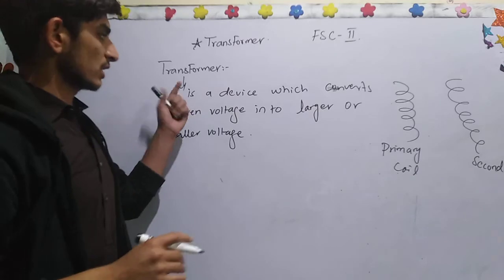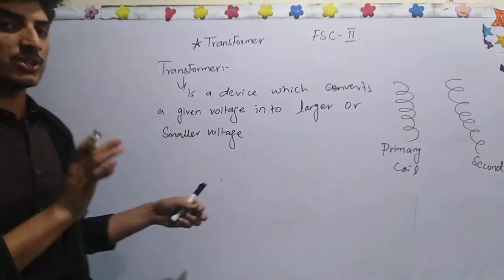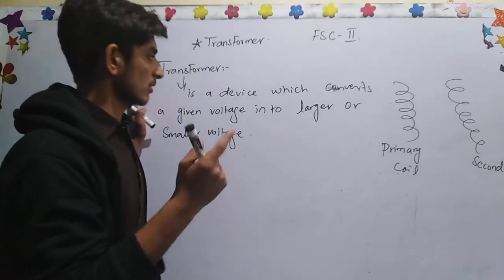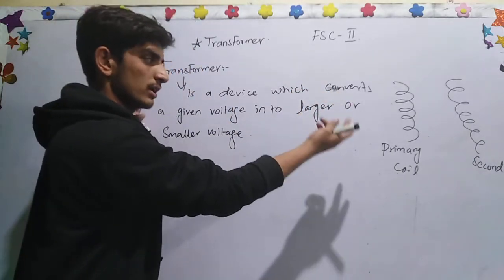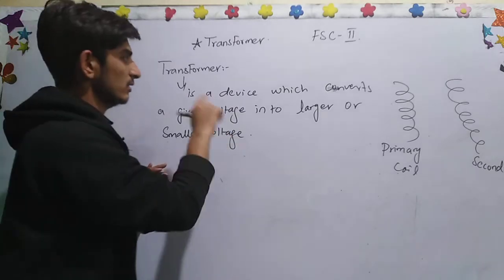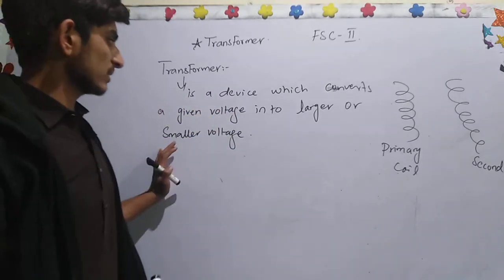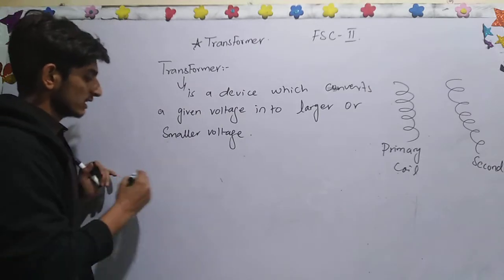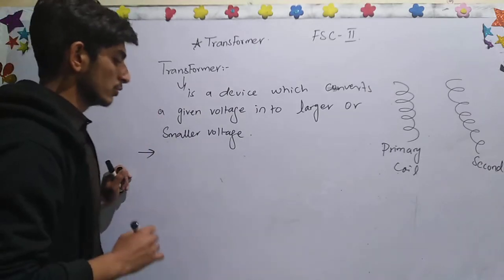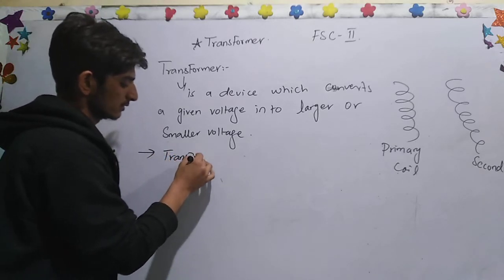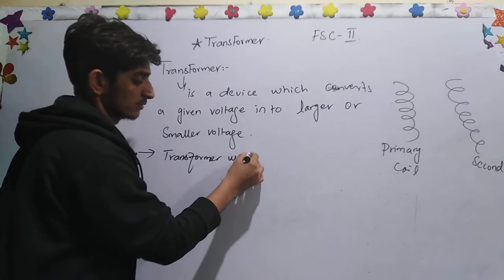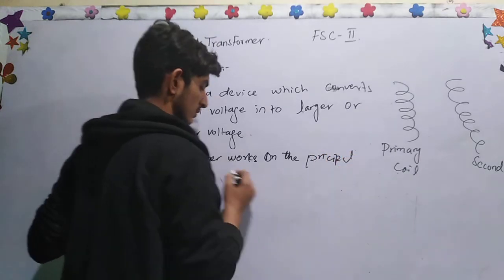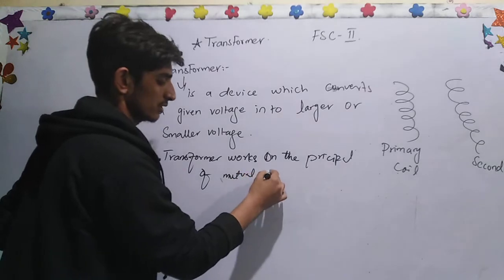We will use the Transformer with alternating current — this is an important point. A Transformer works on AC voltage and converts it into a larger or smaller voltage. In DC voltage or DC current, a transformer does not work. A Transformer works on the principle of mutual induction.